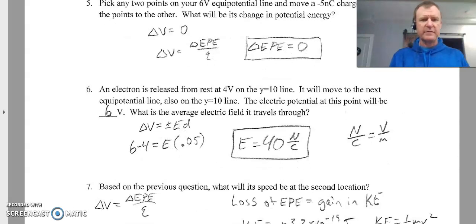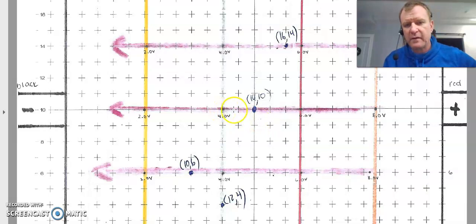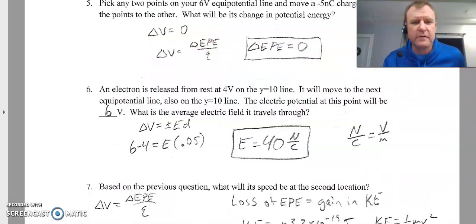Number 6. Electron is released from rest at the 4 volt line, on the 4 volt line, at y equals 10. So here's the 4 volt line. This is y equals 10, right there. So we're going to release an electron right here. So the question is, which direction is it going to go? Well, you've got a negative plate here. You've got a positive plate here. So of course, the negative electron will be attracted to the positive plate. So it's going to go to the right. It will hit then this 6 volt line. That's the next equipotential line it's going to hit, which was my question here. So the electric potential at this point will be 6 volts. I mean, it's going to go all the way towards that positive plate, but I'm just saying the next equipotential line is 6 volts.